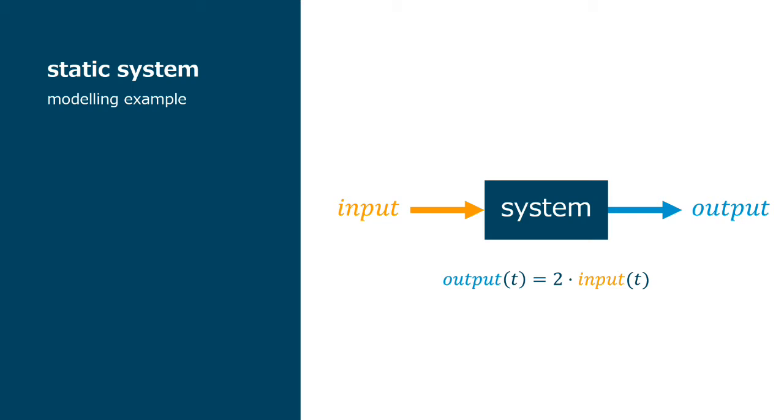For instance, if you have an amplifier with gain 2, you could represent the model as the output is 2 times the input. In this case, the output at time t depends only on the input at time t, which means that this is a static system, without any dynamic.